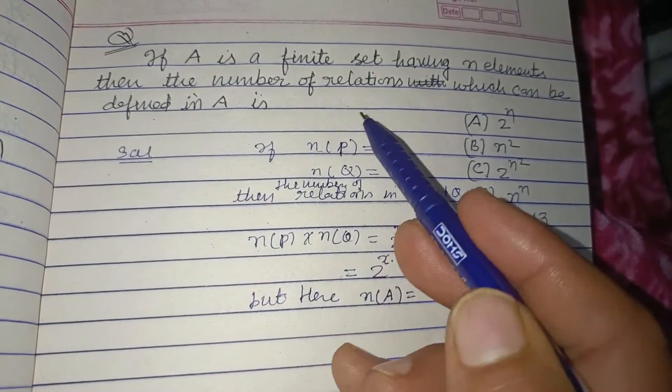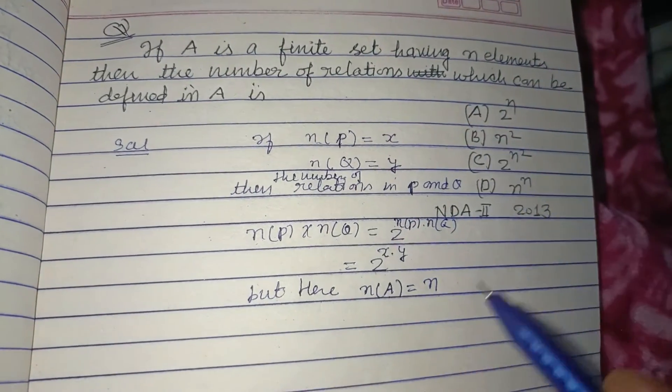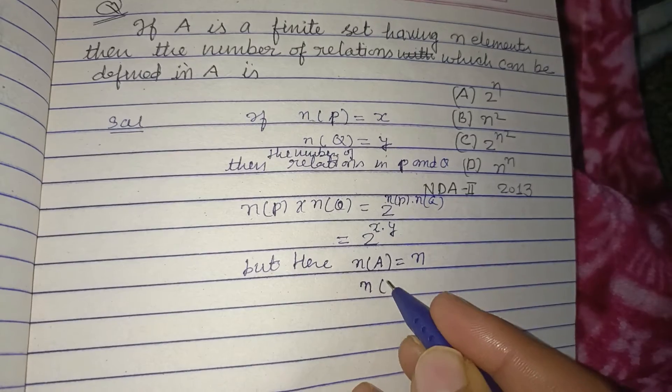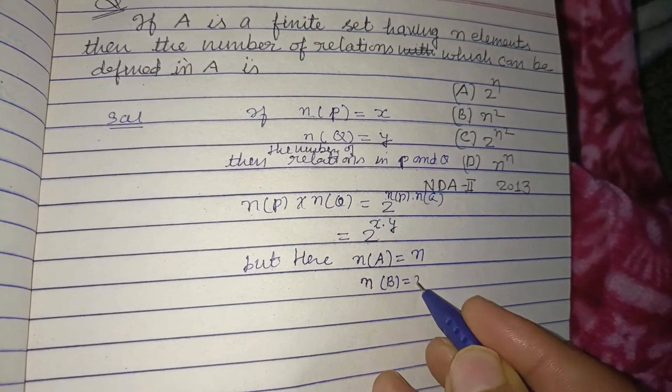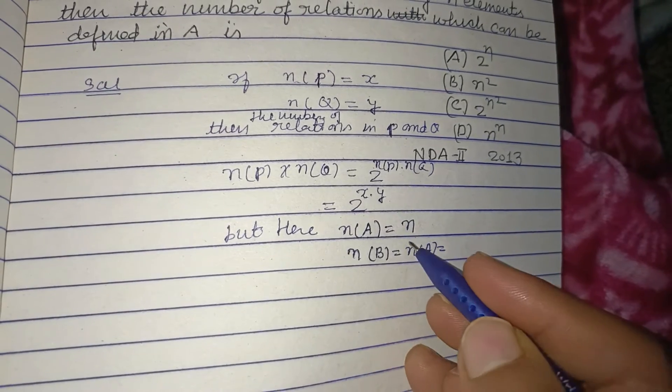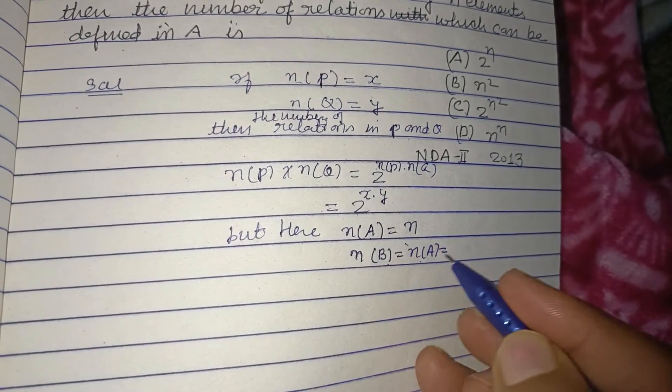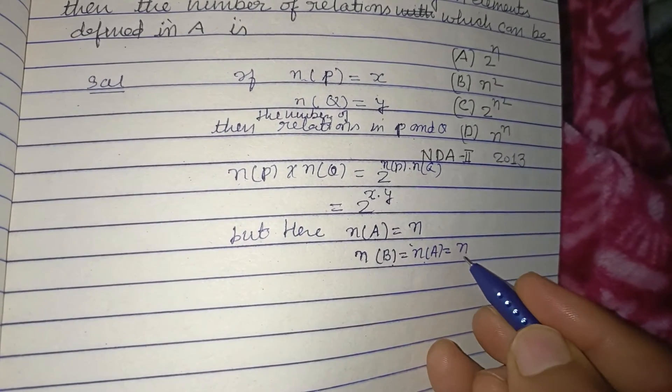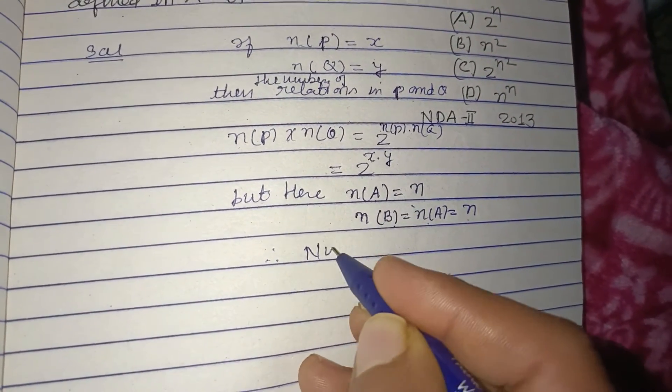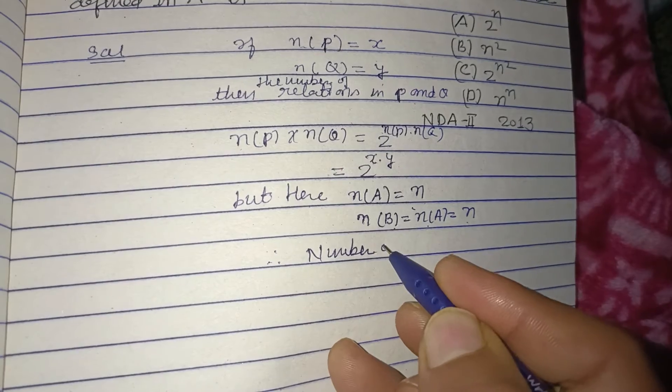find out the number of relations in A. Therefore, n(A) is also n. The other set is also A and its number of elements is n. Therefore, number of relations